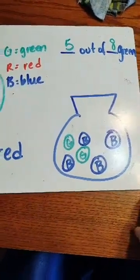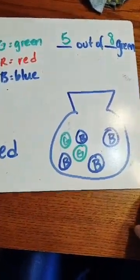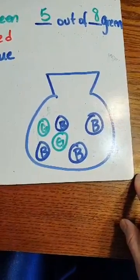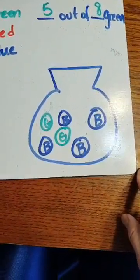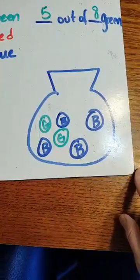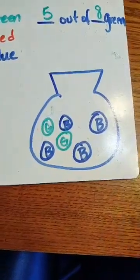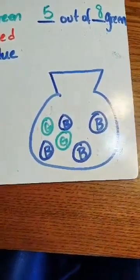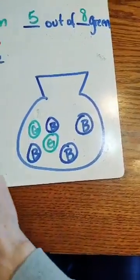All right. Now what is it, what am I least likely to pull out of here? Least likely. I am least likely to pull out a green. You're right, because there are less greens.